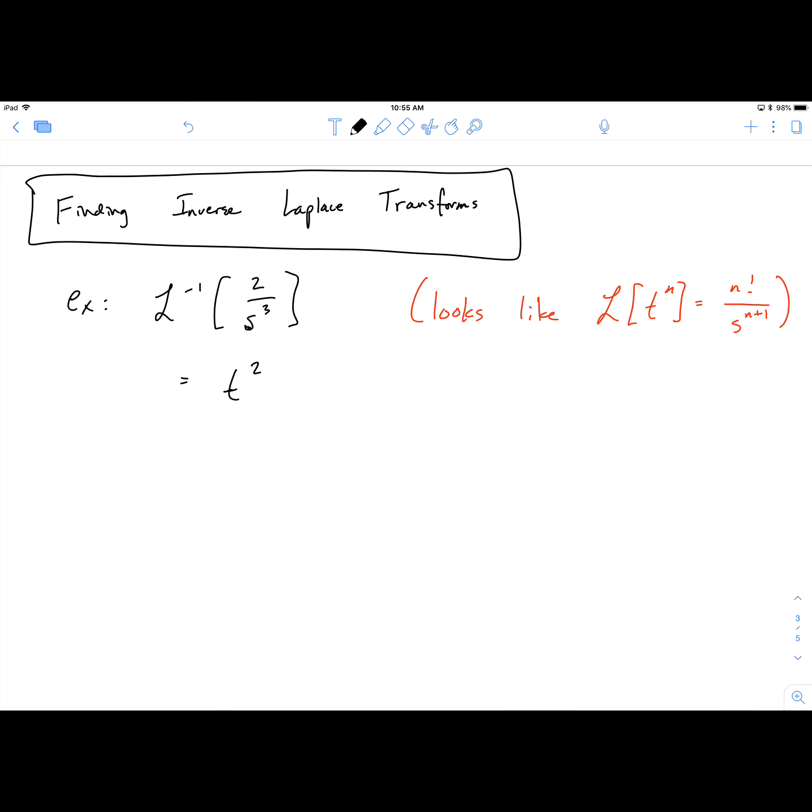And then just go back and verify. If you use t squared, using this Laplace transform, you'd have 2 factorial, which is 2 divided by s to the third. So you're done. That's all there is to it. The answer is just t squared.